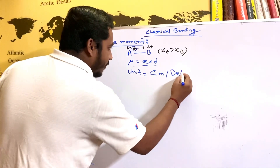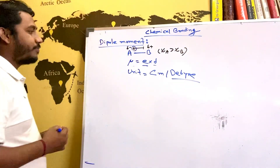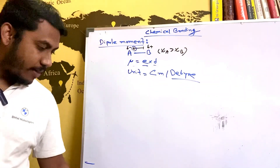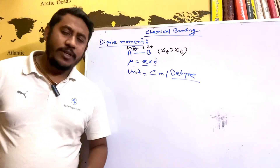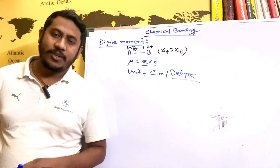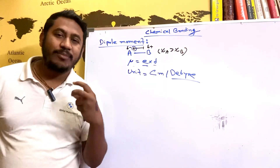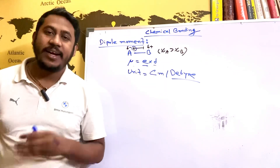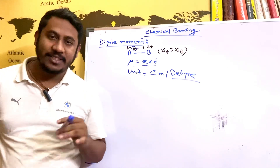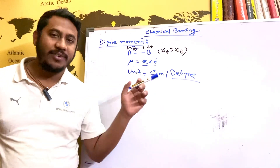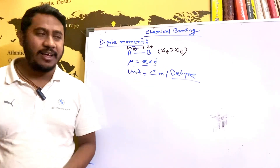The dipole moment is a vector quantity. The direction is from positive to negative. Mu equals e into d, where e means charge and d means the distance between the partially positive and partially negative atoms.